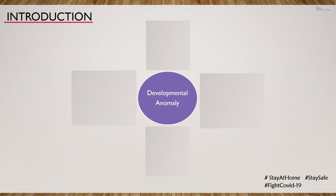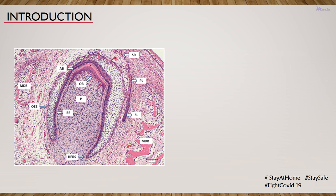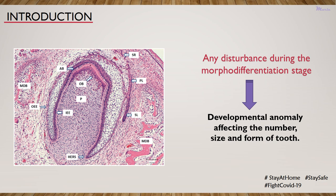The developmental anomalies affecting the tooth include the number, size, form or morphology, and structure of the tooth. In today's topic we are going to discuss the developmental anomalies affecting the number, size and morphology. The image here shows the advanced bell stage of odontogenesis. As you can see, the form of the tooth is established, and the cells of the inner enamel epithelium and the odontoblasts start secreting dentine first and then enamel, leading to formation of the crown. Disturbances occurring during these stages of morphodifferentiation may result in developmental anomalies affecting the number, size and form of tooth.